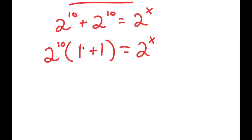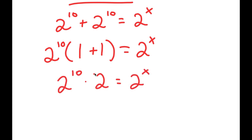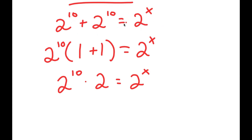1 plus 1 is 2, so I get 2 to the power of 10 times 2 equals 2 to the power of x. A simpler way to see this: we have two copies of 2 to the power of 10, and anything added to itself equals that number times 2. So we could have just written 2 to the power of 10 times 2 from the beginning.